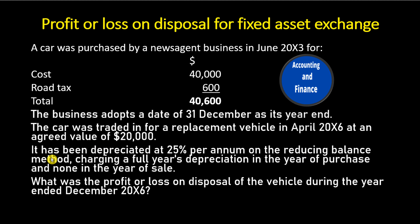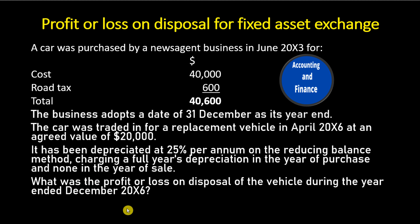The car has been depreciated at 25% per annum on the reducing balance method, charging a full year's depreciation in the year of purchase and none in the year of sale. What was the profit or loss on disposal of the vehicle during the year ended December 20X6?